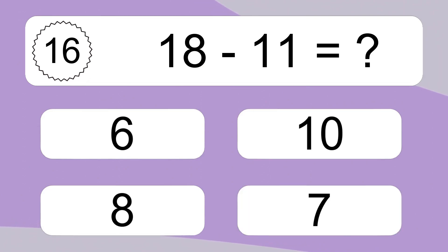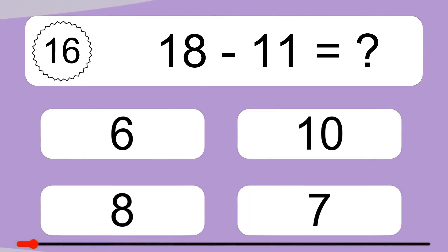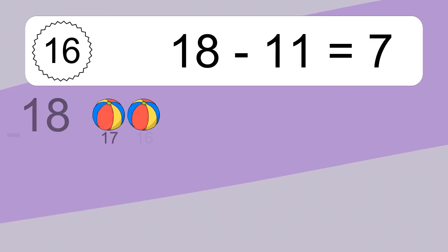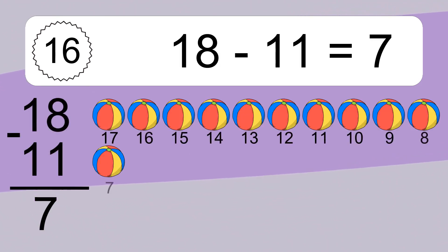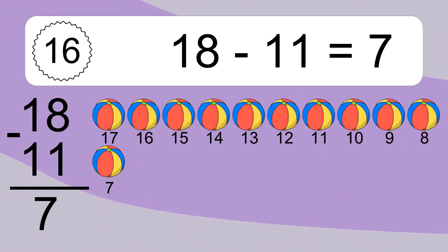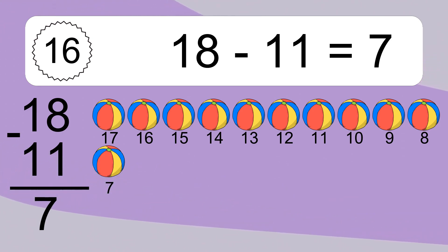18 minus 11 equals what? 18 minus 11 equals 7. Let's count it. 17, 16, 15, 14, 13, 12, 11, 10, 9, 8, 7.